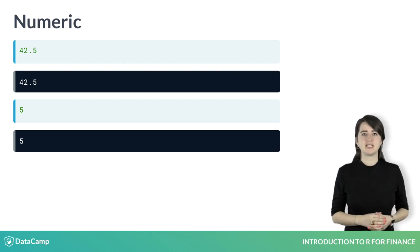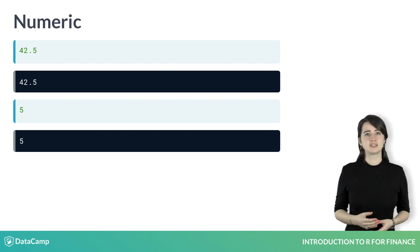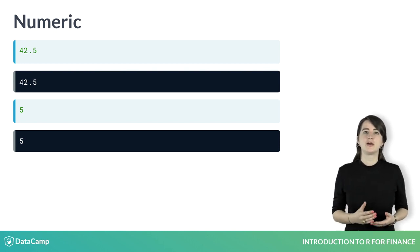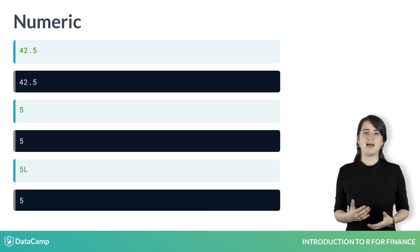A special type of numeric data is integers. Integers are whole numbers that do not have a decimal place. By default, whole numbers like 5 are stored as numeric data, unless you specifically tell R that you wanted to store 5 as an integer. To do this, add a capital L after the number. You will almost always use numerics over integers in R, so this default behavior is nothing to worry about.